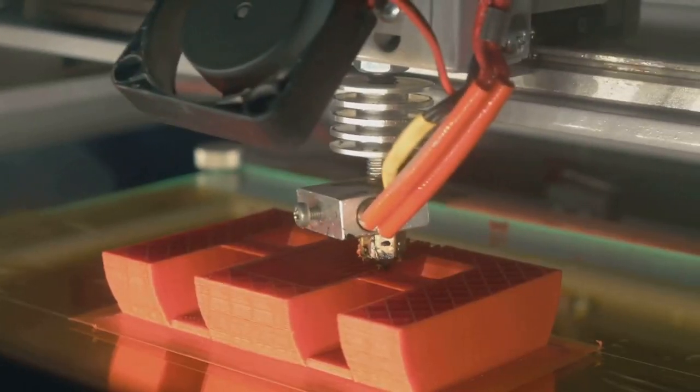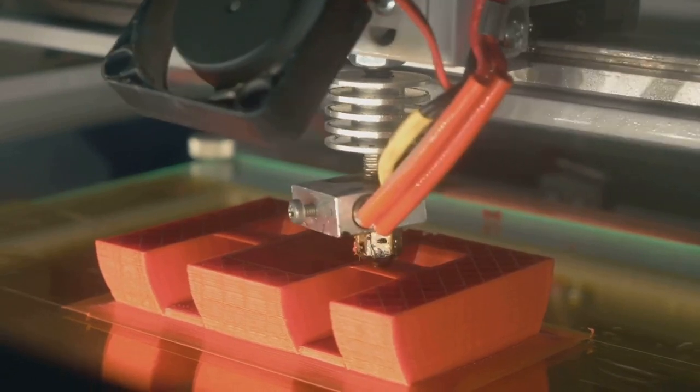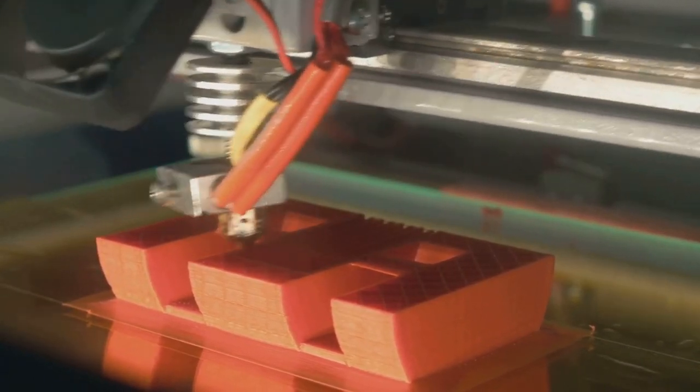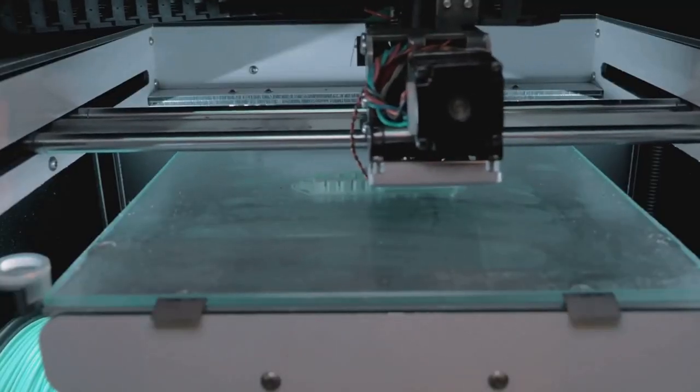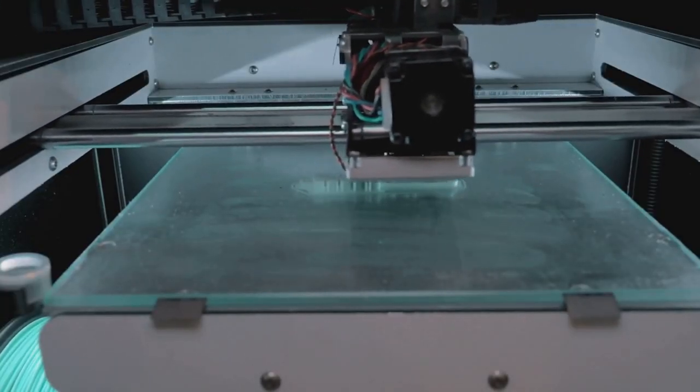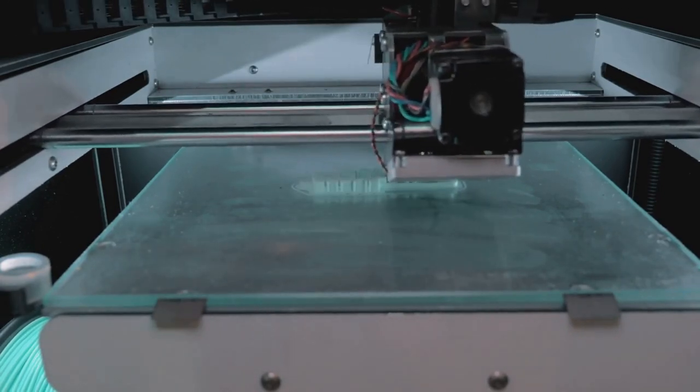No, we're not talking about cutting up the model. Instead, the 3D model is divided into hundreds or even thousands of horizontal layers. This is done using slicing software, which translates the design into a language the 3D printer can understand. Think of it as giving the printer a detailed set of instructions on how to build the object layer by layer.